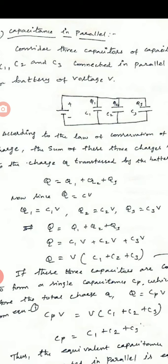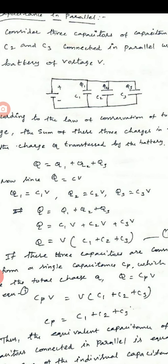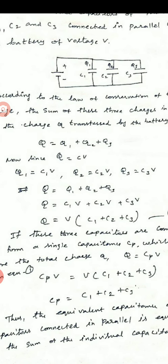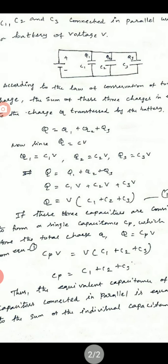Now Q1 equals C1V, Q2 equals C2V, and similarly Q3 equals C3V. Taking V out of the equation, Q equals V times (C1 plus C2 plus C3). This is equation 1.